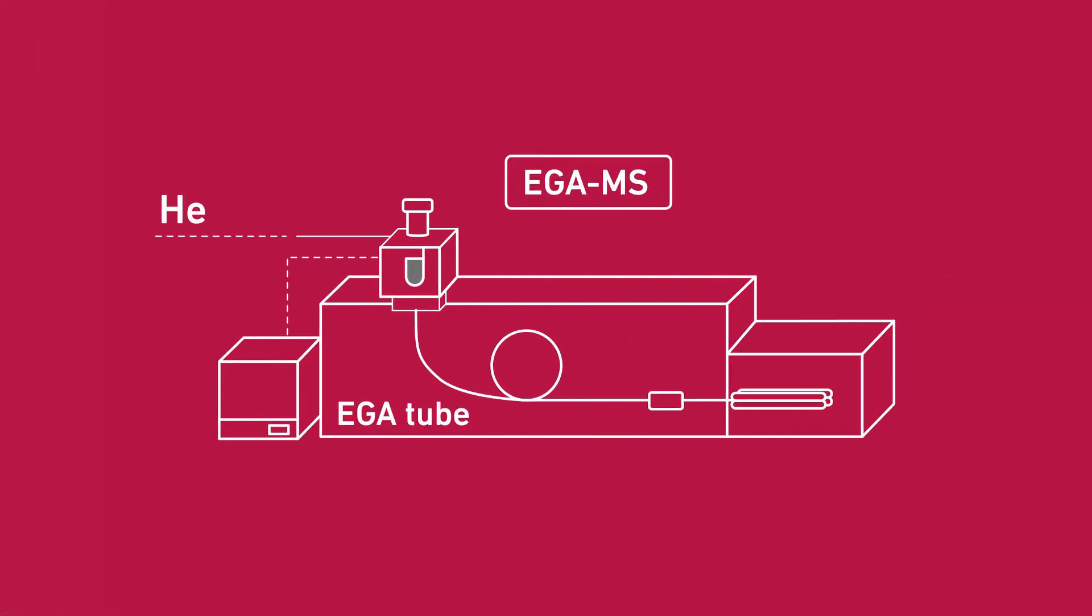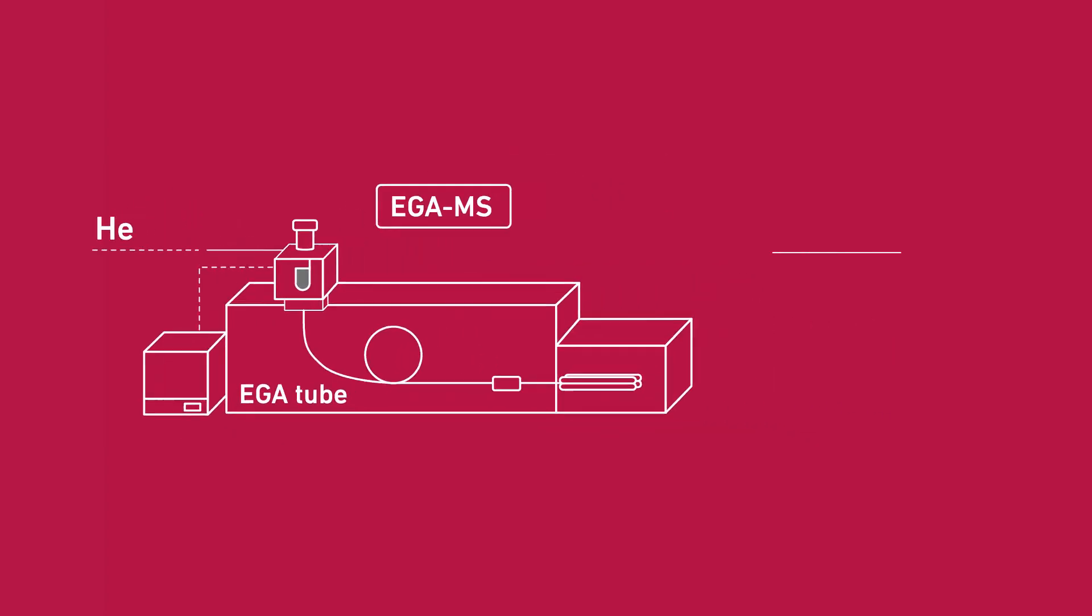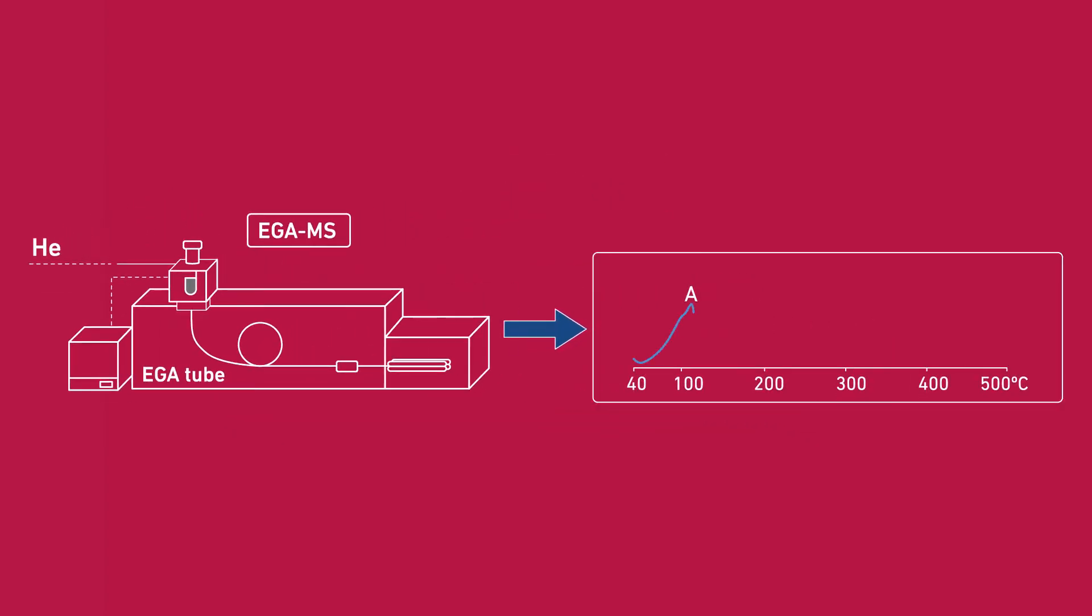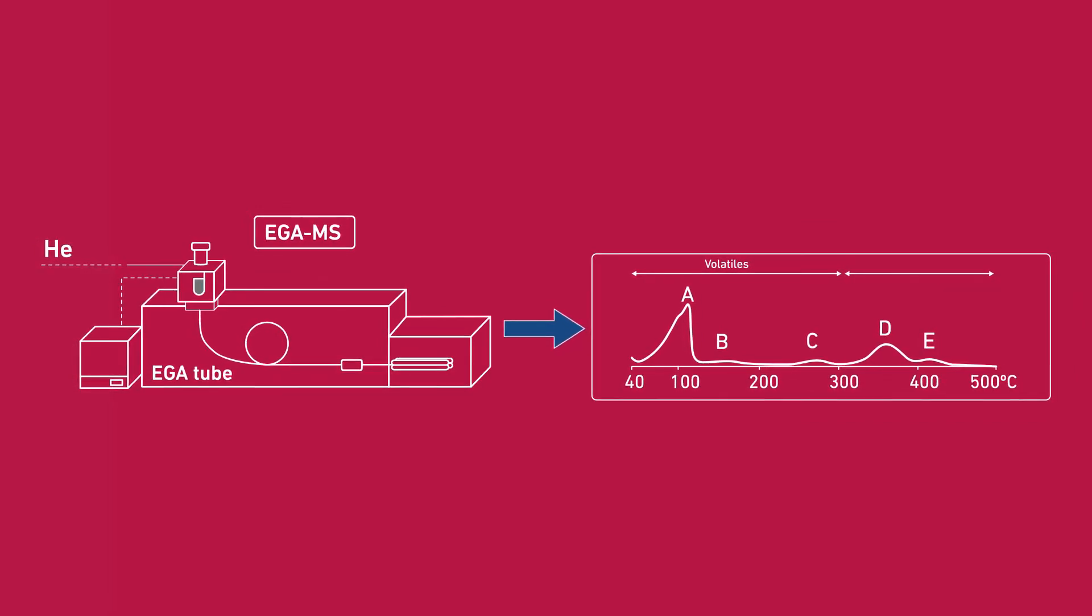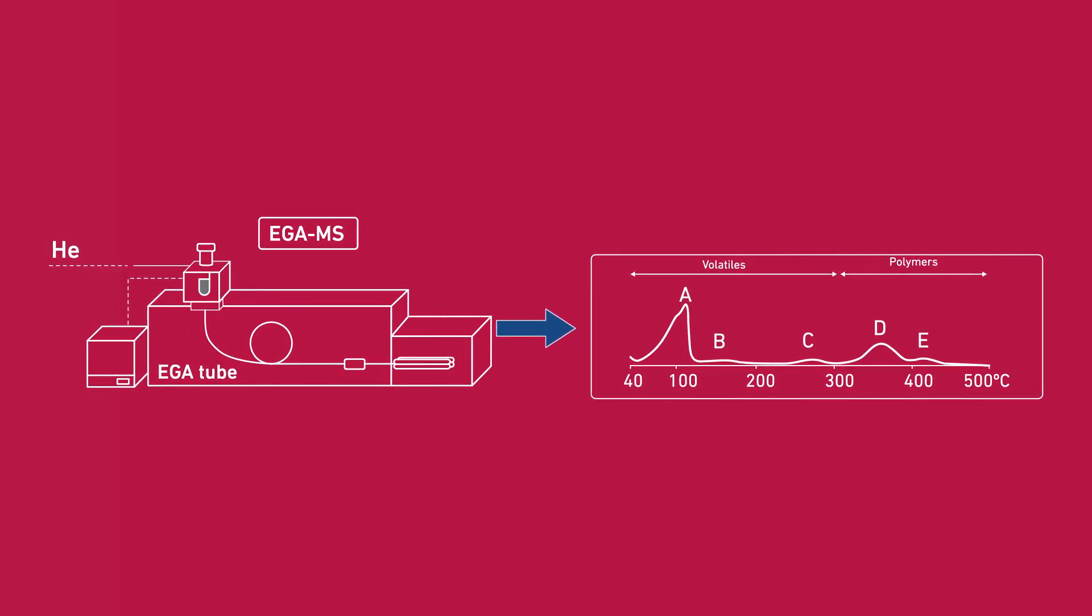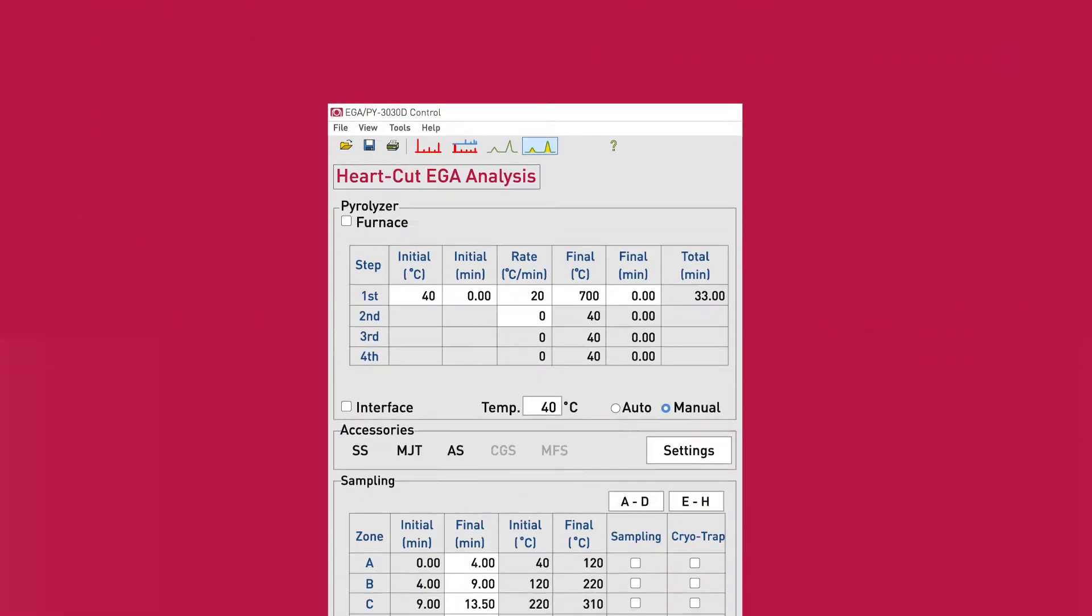Let's use our commercial eyeliner example again. The EGA thermogram of the eyeliner showed a total of 5 zones. 3 zones are the volatiles in the sample and 2 zones originate from the polymeric materials in the sample.